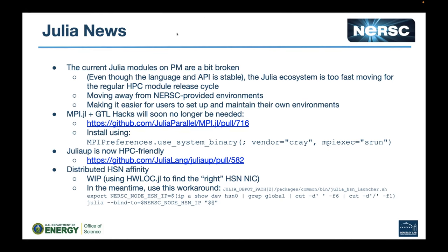Along those lines, there are basically two pull requests — one has already been merged, the other is on the verge of being merged. The first one: MPI and what's called the GPU transport layer has been causing some problems requiring some hacks, and very soon they won't be needed anymore. If you use the branch in the pull request, you can just run MPI preferences with `use_system_binary`, set vendor equals Cray, MPI executable equals srun, and it will automatically find all the right things to do, and your MPI install will work perfectly.